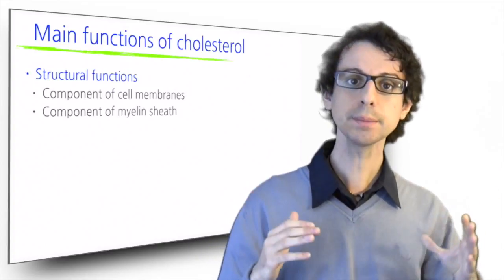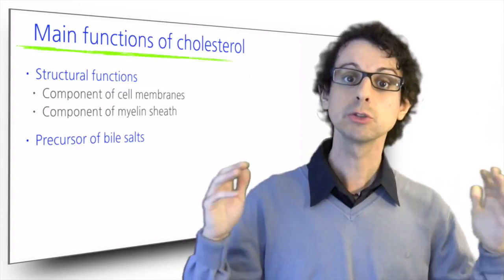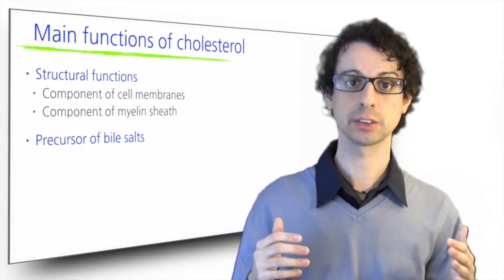Then it's the starting material that our liver uses to build bile salts, which we need to emulsify lipids during fat digestion.